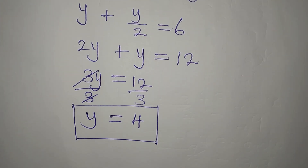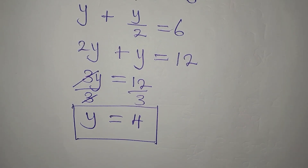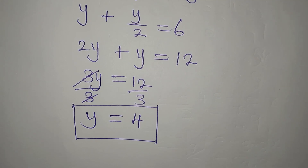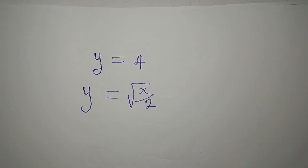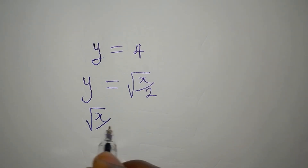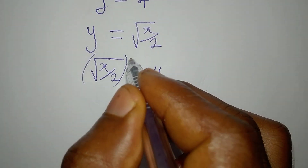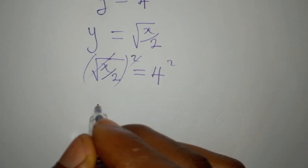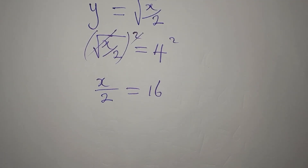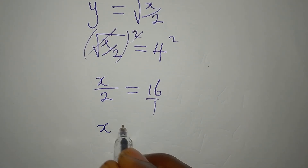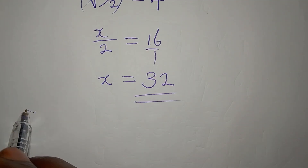Let's go back to where we said y is equal to the square root of x over 2 and substitute to get the value of x. y equals 4 and y equals the square root of x over 2, so the square root of x over 2 equals 4. Squaring both sides gives x over 2 equals 16. Cross-multiplying, x equals 2 times 16, so x equals 32.